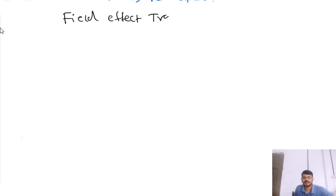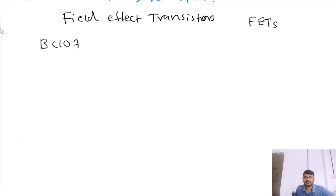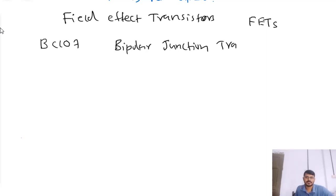In this video I am going to discuss about field effect transistors. Field effect transistors are also said to be FETs. If you consider a BC 107 transistor or a general ordinary transistor, this transistor is said to be a bipolar junction transistor. Now why is it said to be a bipolar junction transistor? Because here both electrons and holes will take part in the conduction process.